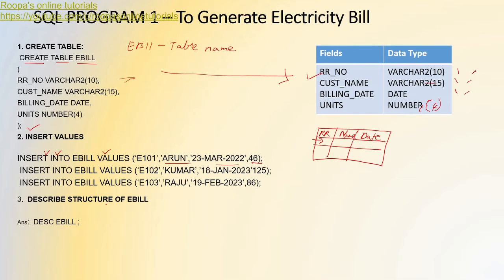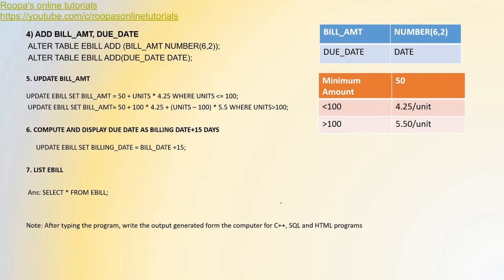Next we need to describe the structure of this table. The command is DESC followed by the table name — DESC ebill. 'DESC' stands for describe. Once you run DESC ebill, you get a description of all the fields available in the table. Please write this output on your answer sheet once you get it on screen.